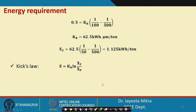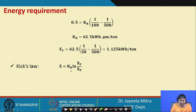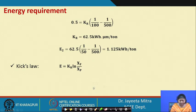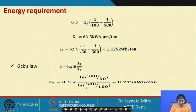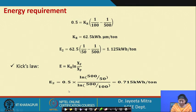For Kick's law, we use the ratio: E₂/E₁ = ln(x_f/x_p2) / ln(x_f/x_p1). So E₂ = [ln(500/50) / ln(500/100)] × 0.5 = 0.715 kWh/ton. We will stop here and continue in the next class.